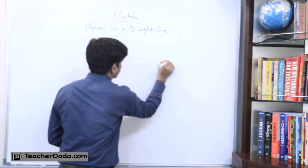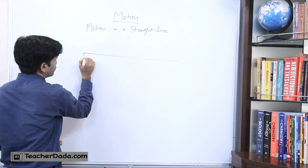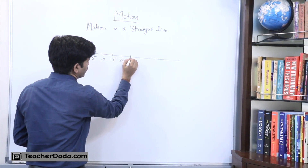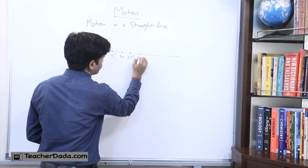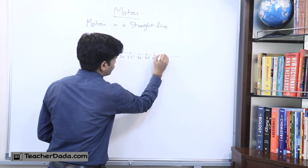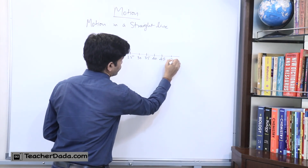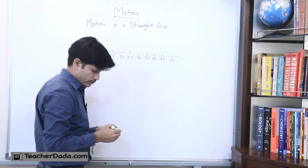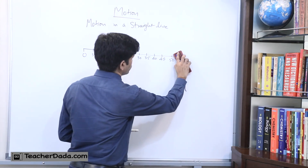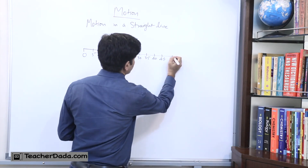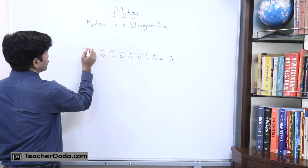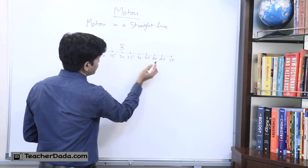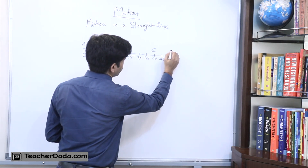Suppose I draw a line here and write some numbers: 0, 5, 10, 15, 20, 25, 30, 35, 40, 45, and 50. Let us take some points: point A at 0, point B at 20, point C at 40, and point D at 50.